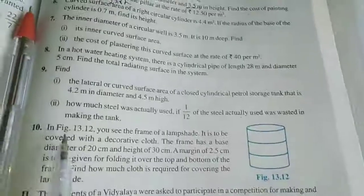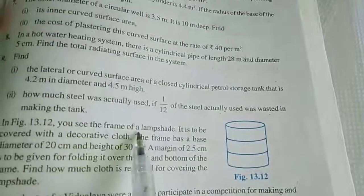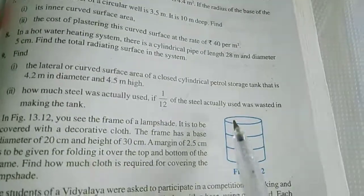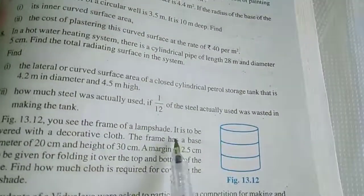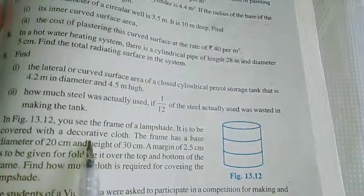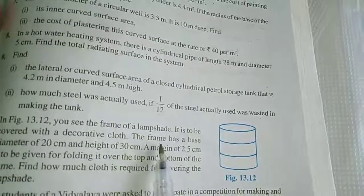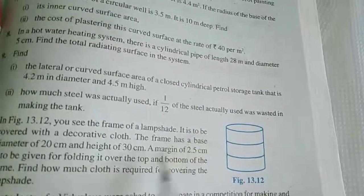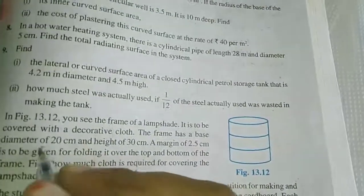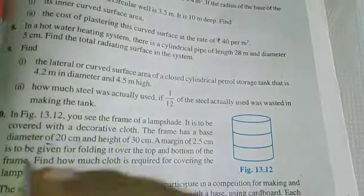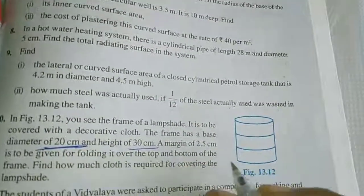See the 10th sum in figure 13.12. In figure 13.12 you see the frame of a lampshade. The lampshade is to be covered with a decorative cloth. The frame has a base diameter of 20 cm and height of 30 cm.